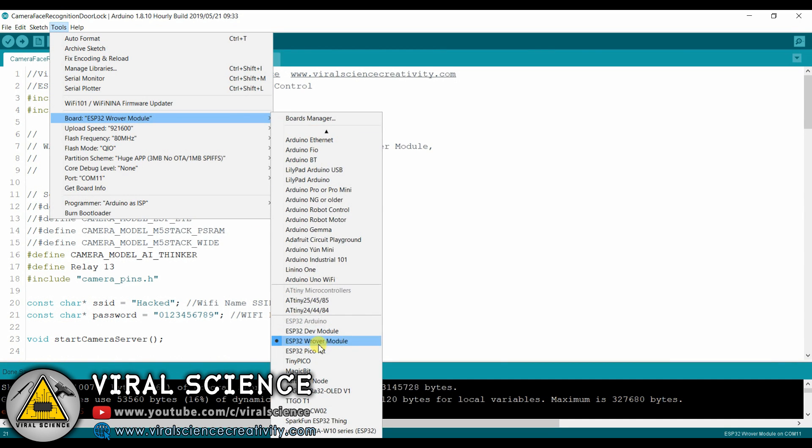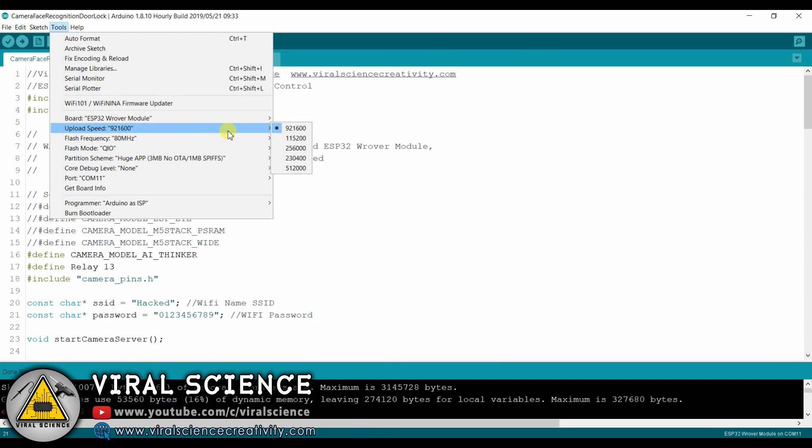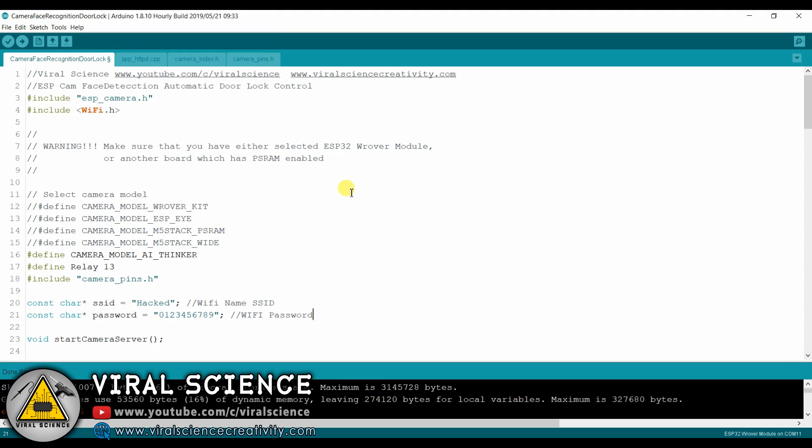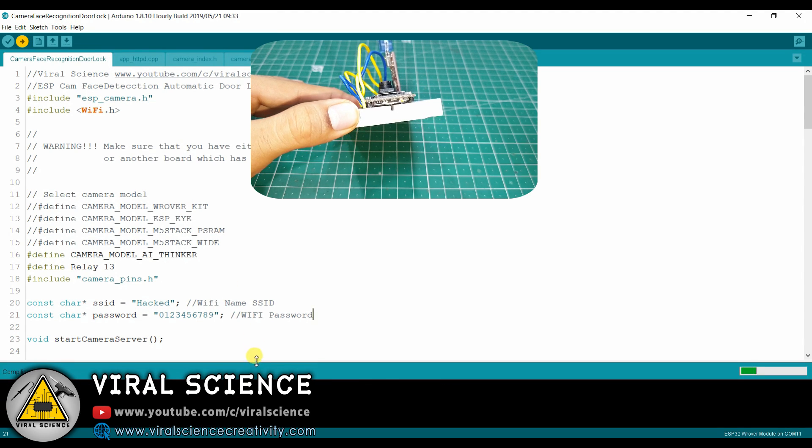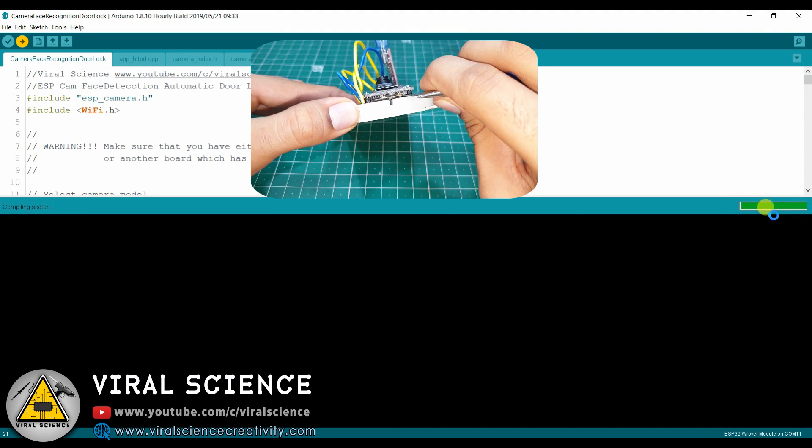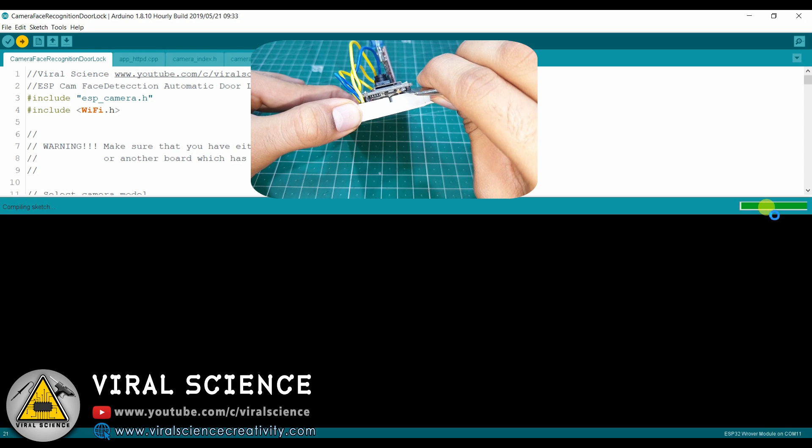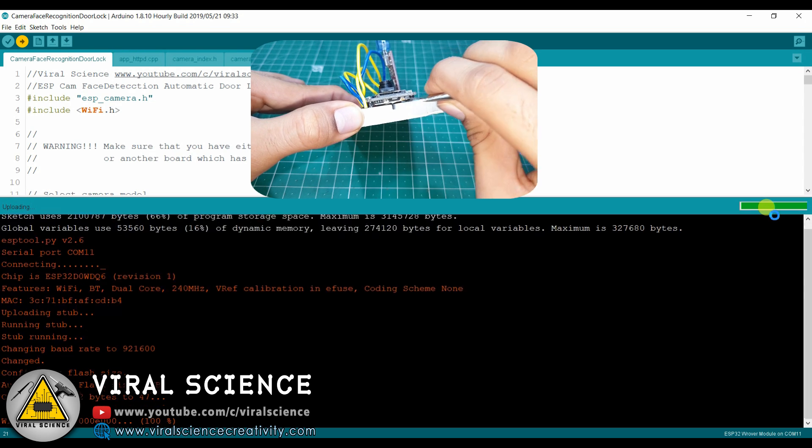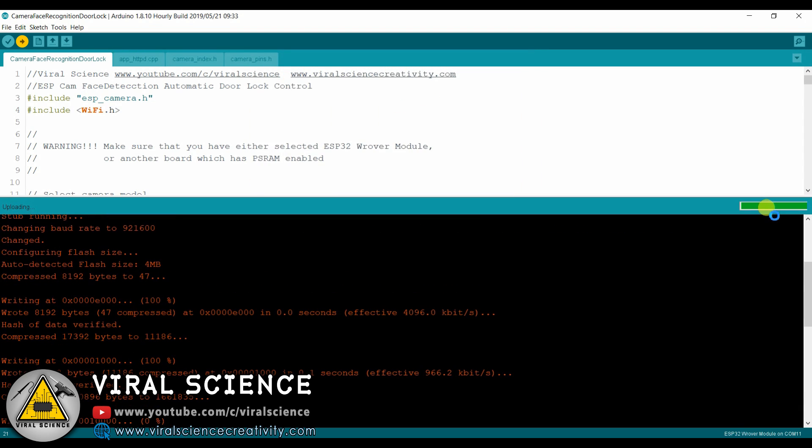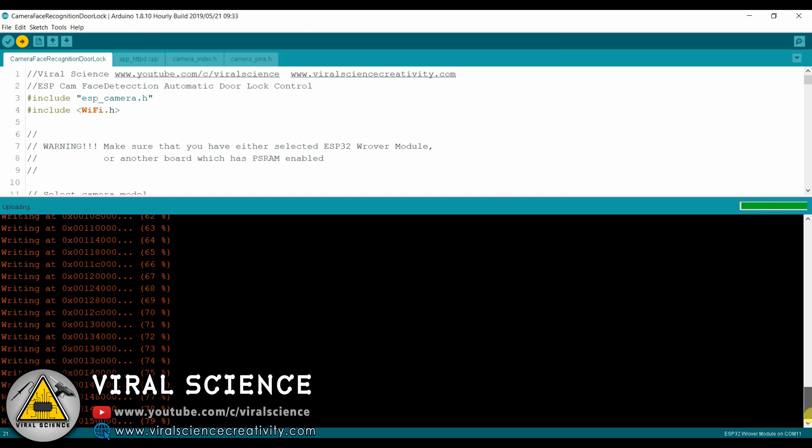Now properly select all these options from tools tab. Now click on upload button. When this bar is filled you can press the reset button which is below the board. And now it will start uploading the code.